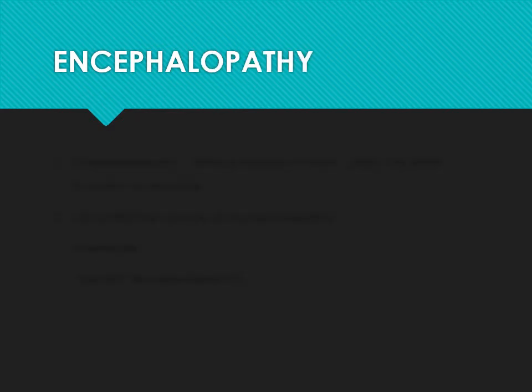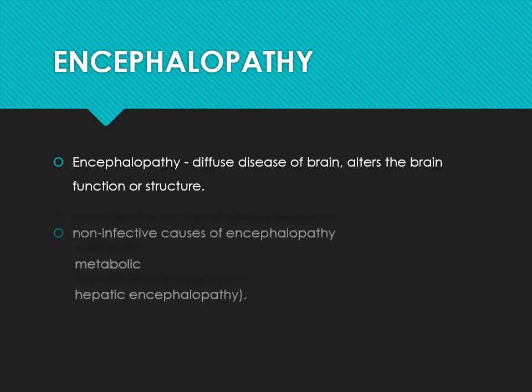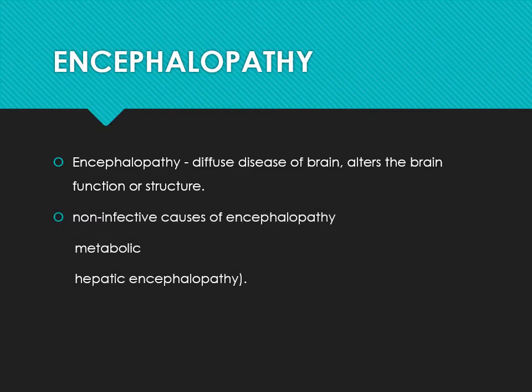What is encephalopathy? Encephalitis is the acute inflammation of the brain parenchyma, whereas encephalopathy is a diffuse disease involving all of the brain, which alters its function or structure. The causes for encephalitis are usually infectious agents, but for encephalopathy these are non-infectious causes — some metabolic disorder, like hepatic encephalopathy.